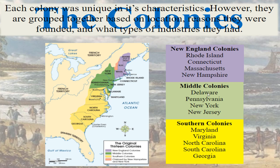The colonies are broken into three groups. New England colonies are Rhode Island, Connecticut, Massachusetts, and New Hampshire — these are not states at this time, these are colonies. The middle colonies are Delaware, Pennsylvania, New York, and New Jersey. And the southern colonies are Maryland, which is where we live, Virginia, North Carolina, South Carolina, and Georgia. So those are our original 13 colonies.